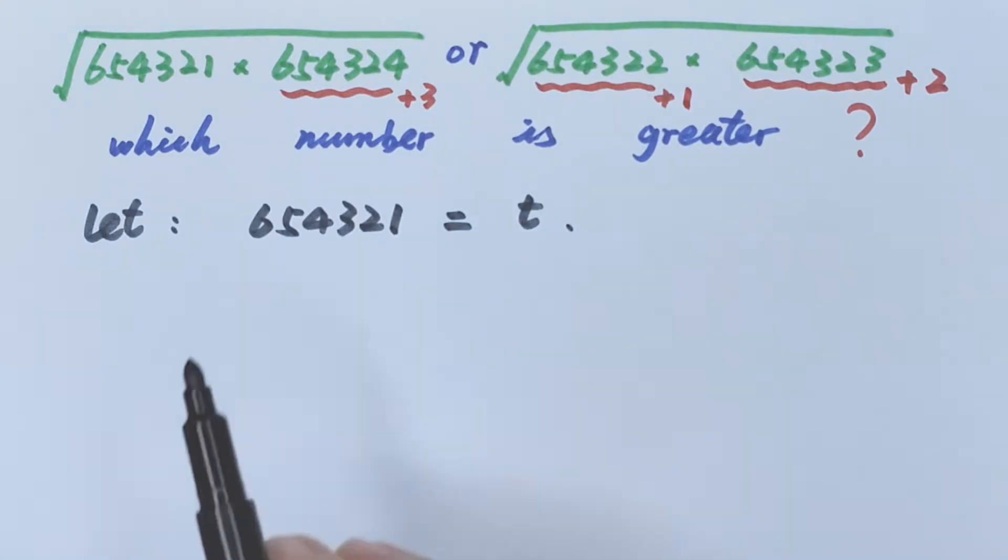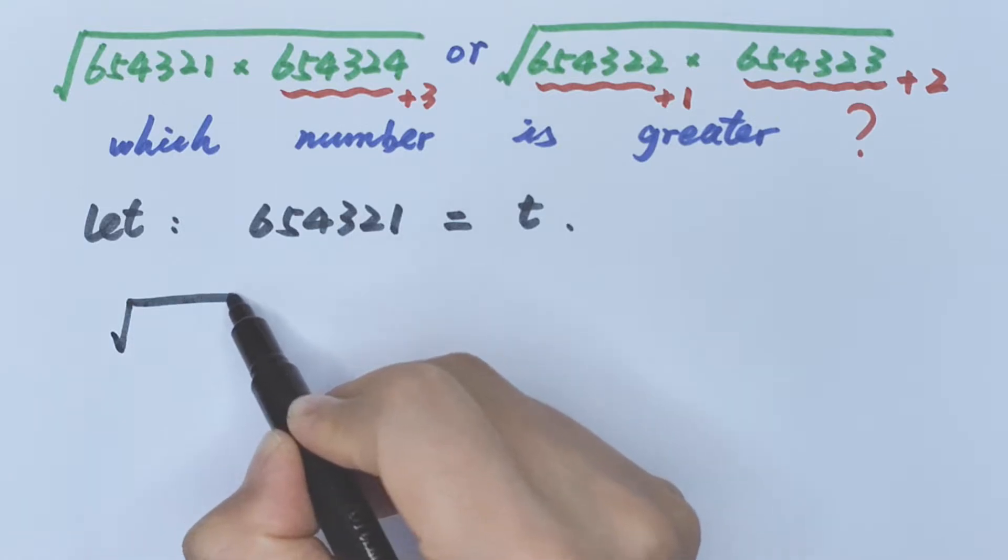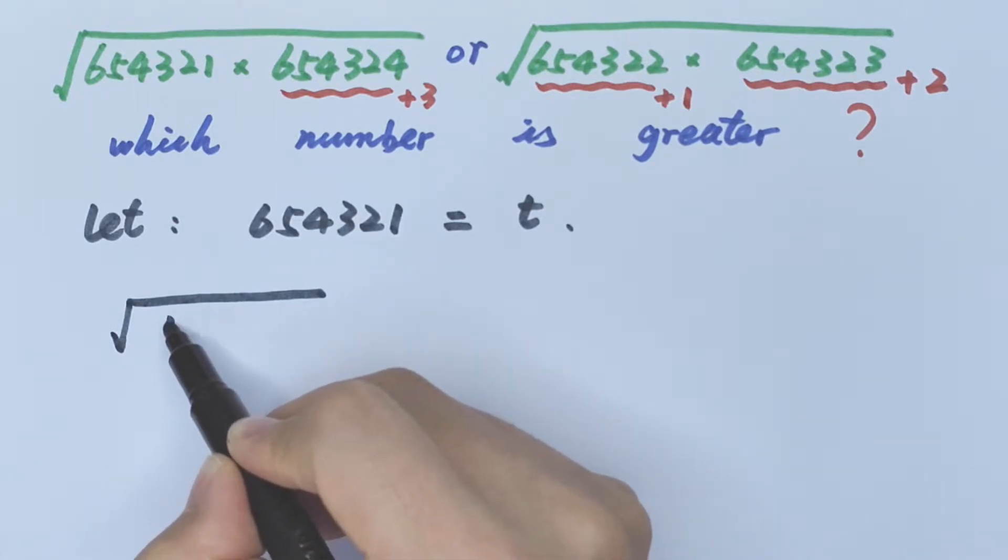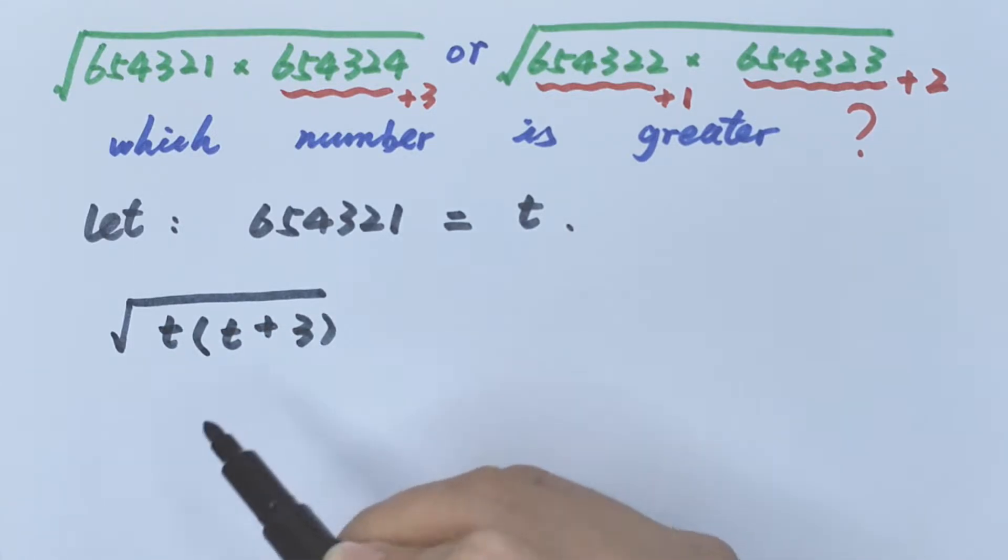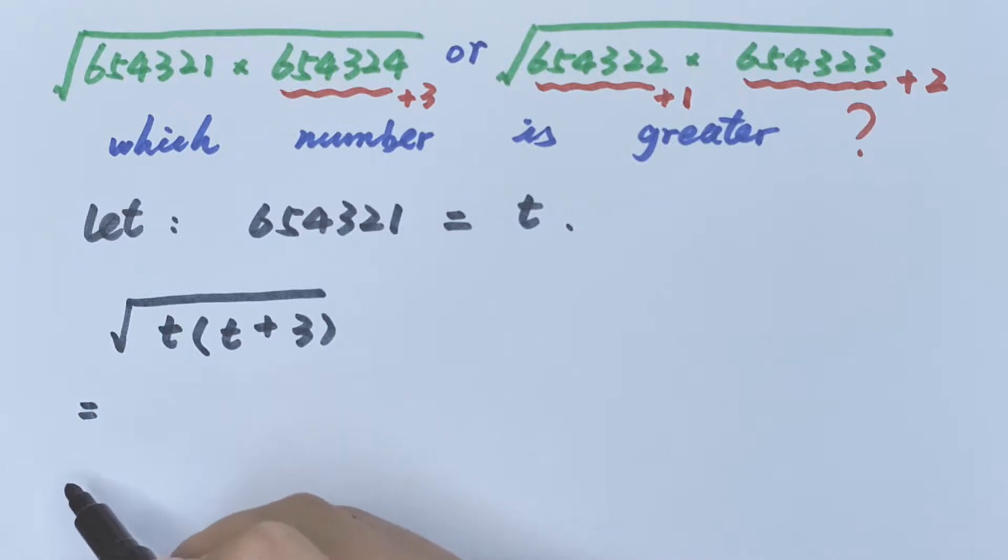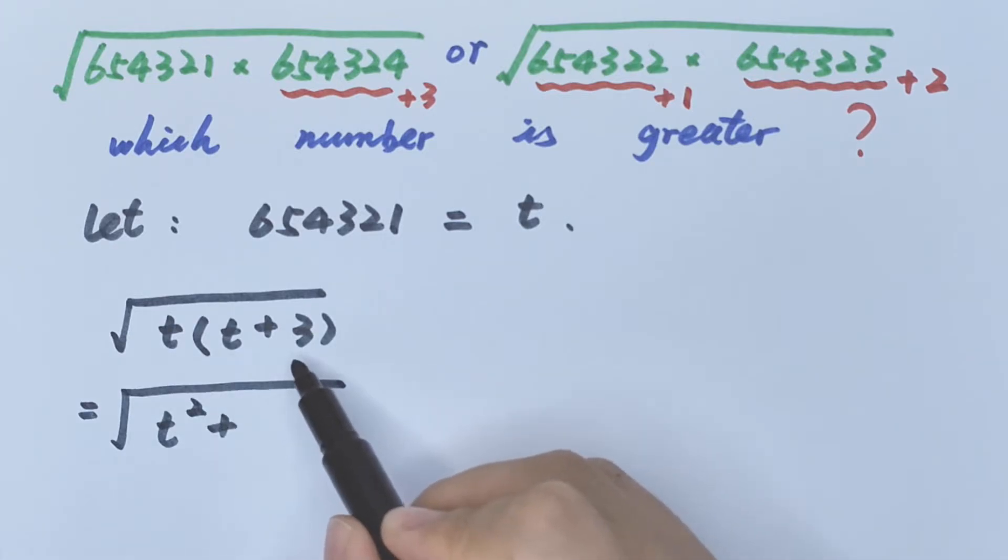So the left side is same as square root of t times t plus 3 bracket equals, we open the bracket, so square root of t times t is t squared plus t times 3 is 3t.